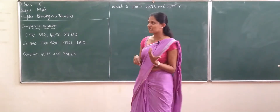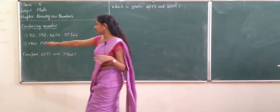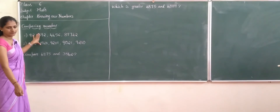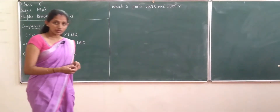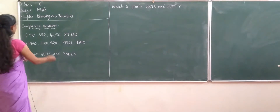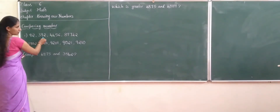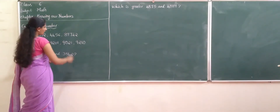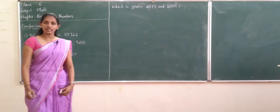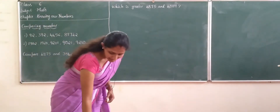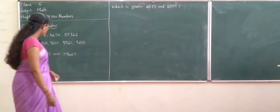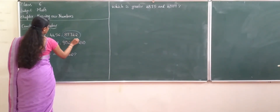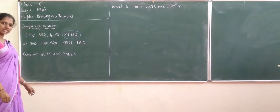In earlier classes you have already done comparing numbers. You have to tell me which number is greater: 92, 392, 4,456, or 89,742. Which number is greater? Correct — 89,742 is greater.